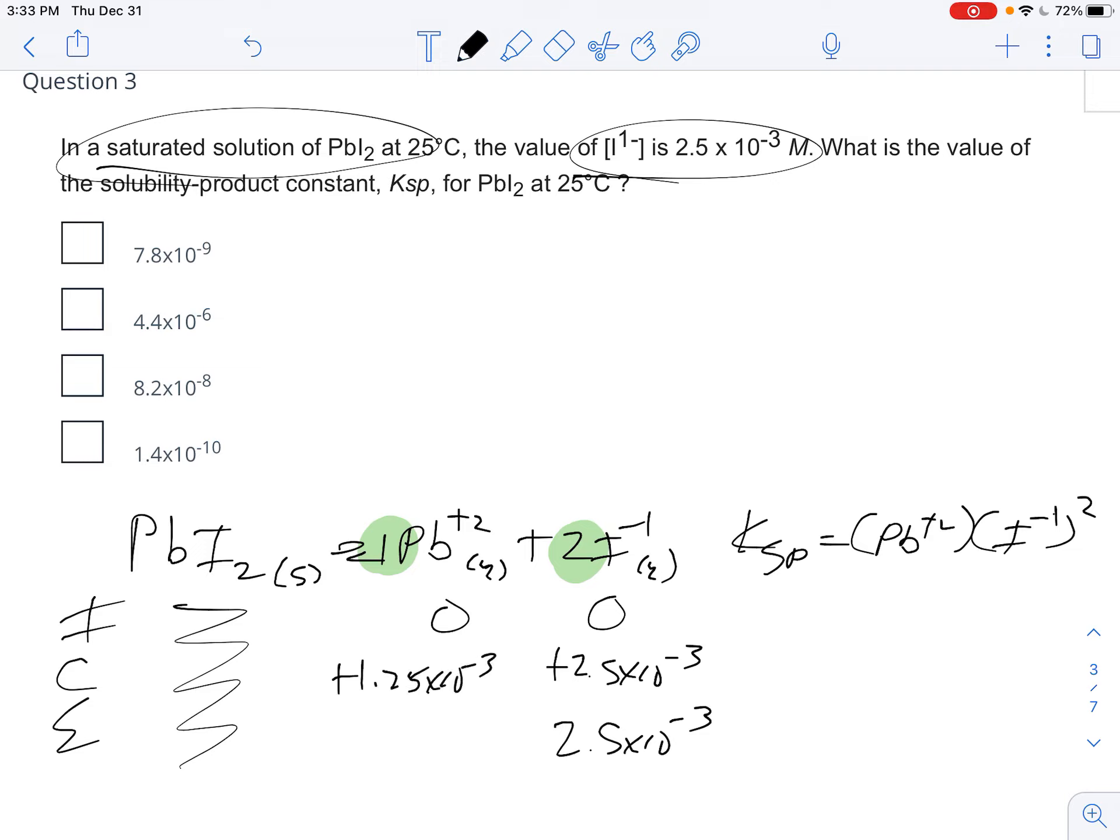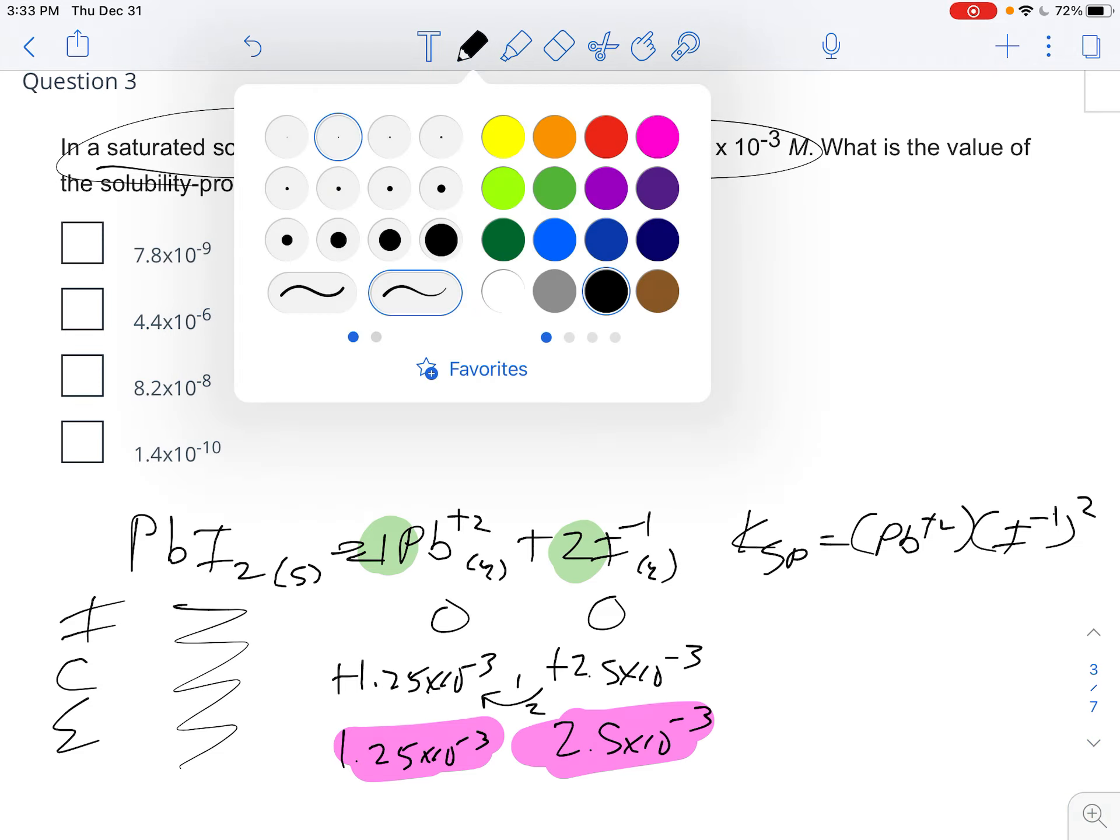So this had to have gone up by 1.25 times 10 to the negative third, because it's a one to two ratio here. So this is 1.25 times 10 to the negative third. I now have my equilibrium amounts, and remember that when you have equilibrium amounts, those equilibrium amounts can go right into your equation.